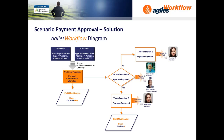Translated into Agilis Workflow, the condition is that a payment is entered for more than $1,000, and that will trigger the Payment Authorization Workflow. The first step will actually be a field modification — Agilis Workflow will automatically move the payment journal to on hold. Then the first to-do is to approve the payment, and Agilis Workflow will look at whether it is a currency payment or not and automatically work out who is the right person to forward this to-do to.